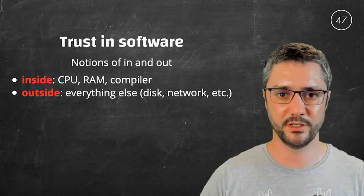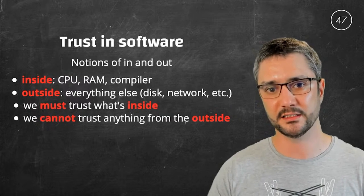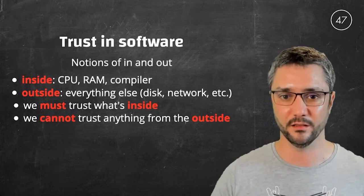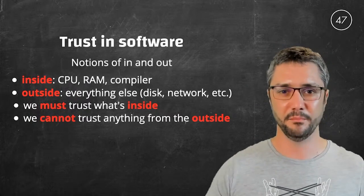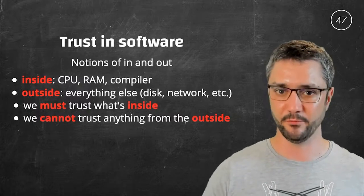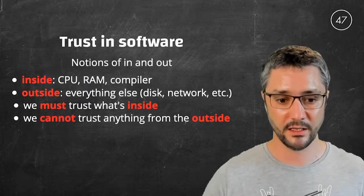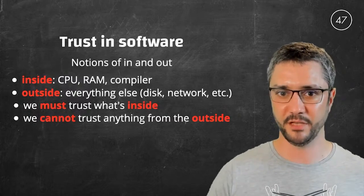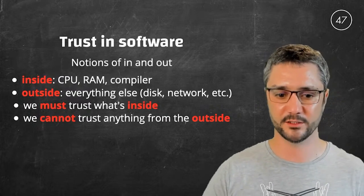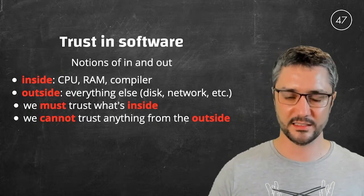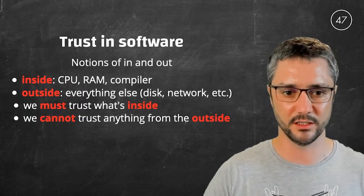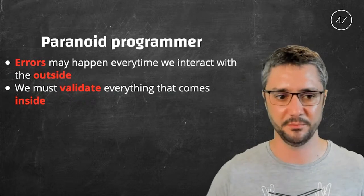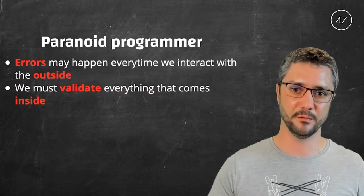And once we have defined that, we realize that we have no choice but to trust what's inside. Of course, the CPU can fail or the memory can flip a bit. But if that happens, there is absolutely nothing we can do. So we have to trust it. And on the contrary, we cannot trust anything from the outside, because the disk may fail, the network is unreliable, and so on. So that's it about trust. And therefore, since we cannot trust anything, except for the CPU and the memory, we have to become paranoid.